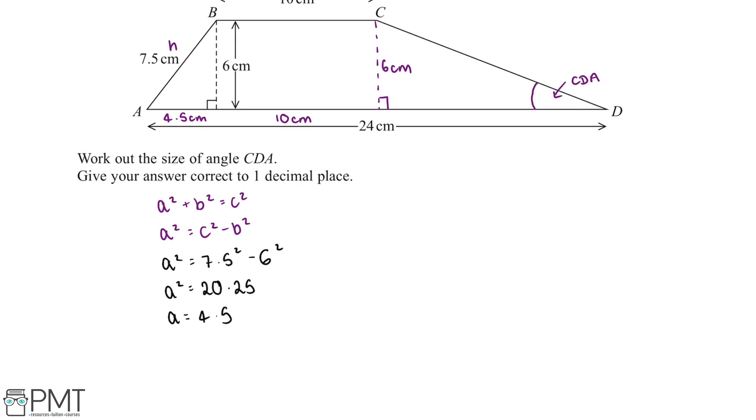So on the diagram we've also been told that the full length of the trapezium is 24 cm. So what this means is the base of this right angled triangle on the right hand side of the trapezium will be equal to 24 minus 10 minus 4.5, which is the lengths we worked out for the base of the rectangle and the base of this right angled triangle on the left.